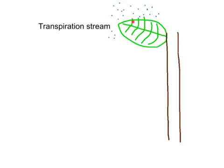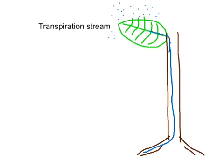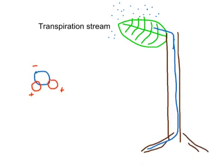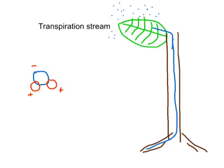As water is lost in the leaf, more water must be drawn up through the xylem from the roots to replace it. Water moves up a continuous water column from the roots, through the xylem in the stem, and eventually into the leaf. This is a continuous process because water molecules — H₂O — have tiny positive charges on the hydrogen atoms and tiny negative charges on the oxygen atoms, since oxygen is more electronegative. These tiny charges cause water molecules to stick together.